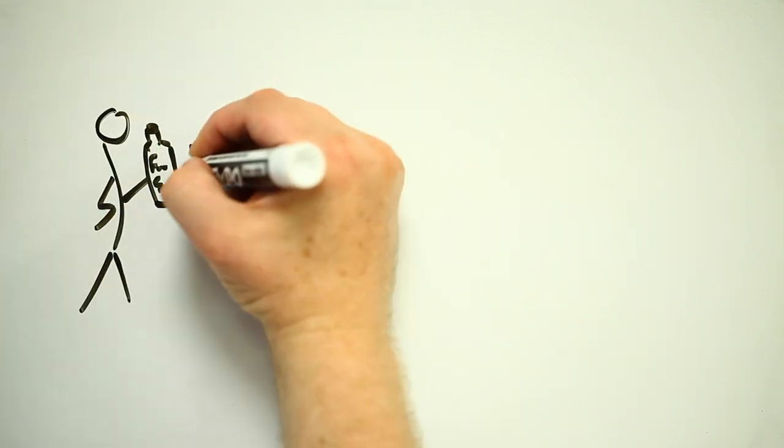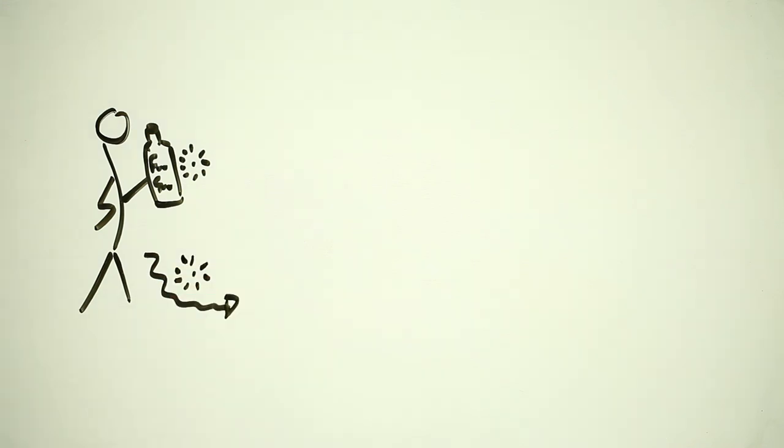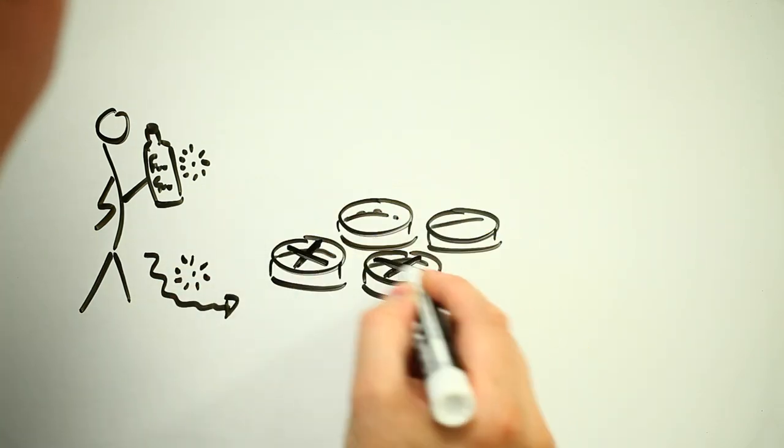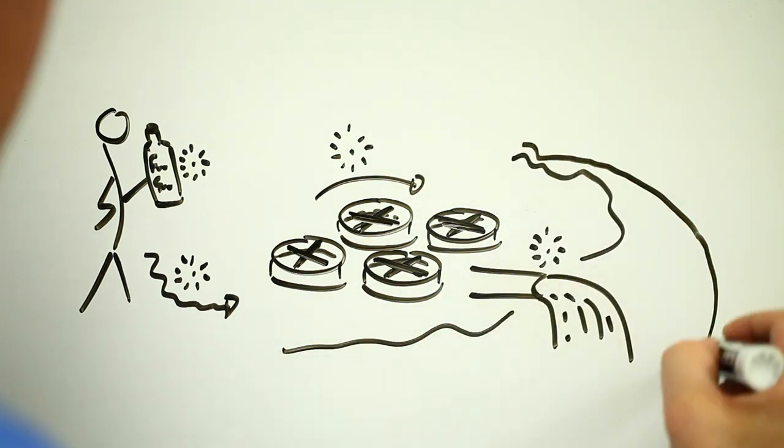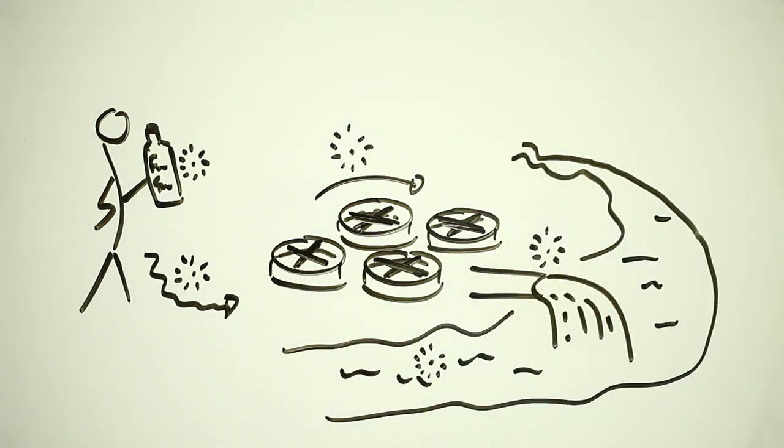Microbeads in personal care products eventually end up being washed down the drain, and because they're so small they escape capture in wastewater treatment plants, eventually ending up in rivers, lakes, and oceans. Once there, because they don't degrade or sink, they stick around for a long, long time.